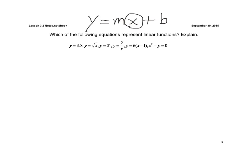So if we take a look at this first one, y equals 3.8 — there's not an x variable, but I could write y equals 0 times x plus 3.8. So I can identify that my m is 0 and my b is 3.8. So yes, that's linear.